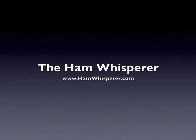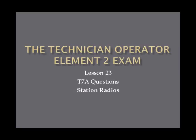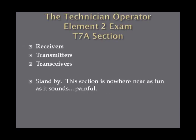Hi again. This is Andy, KE4GKP. Welcome back to the Ham Whisperer and lesson 23 in the Technician Operator Element 2 Exam Preparation Course. In this lesson, we're going to go over the T7A questions, which cover station radios. The T7A section covers questions on receivers, transmitters, and transceivers. This is probably the most painful section on the entire exam — there's a lot of obscure information, especially if you haven't worked with radios or electronics before, but if you stick with it, you'll be all right.